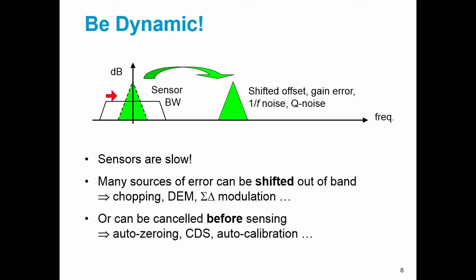In addition, another thing that we can do is to use the speed of electronics to cancel circuit errors before we actually start measuring or sensing. And techniques which fall into this category are things like auto-zeroing, correlated double sampling, and auto-calibration.